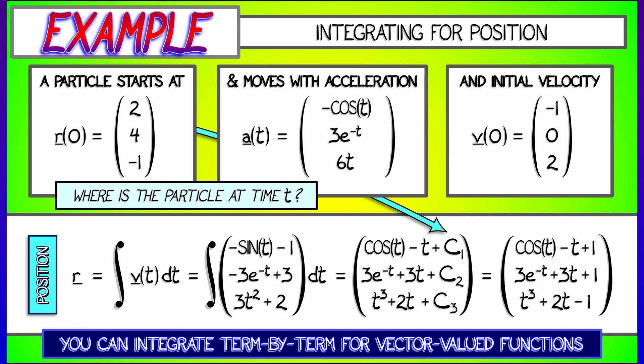Again, what have we done? We've taken that acceleration vector, integrated it twice, term by term, in order to get the position vector. That's one simple way that we can work with vectors as a function of time and integrate them term by term.